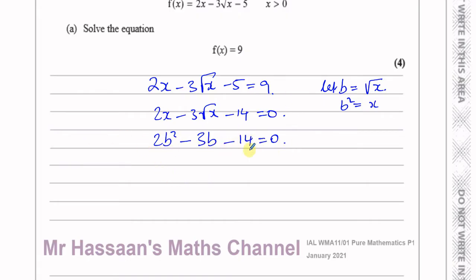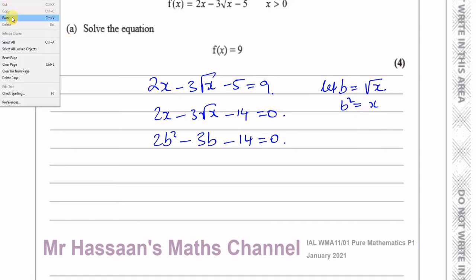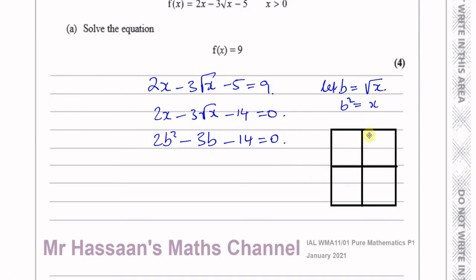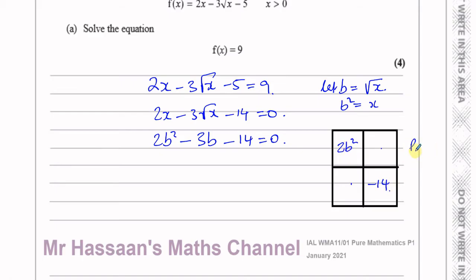It's in the form of a quadratic, which I can solve by factorizing. I'll use my grid method here. I've made a grid — I put 2b squared in one corner and minus 14 in the other corner. I need to find two numbers which multiply to give the same as this product, so the product has to be minus 28b squared. And the sum of these two numbers must equal minus 3b. Thinking of ways to get 28: 7 times 4 gives 28.